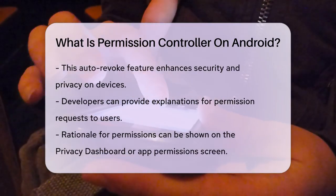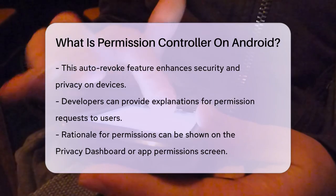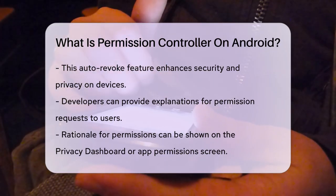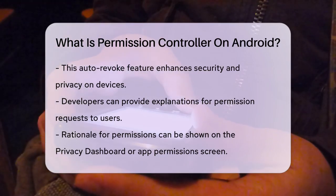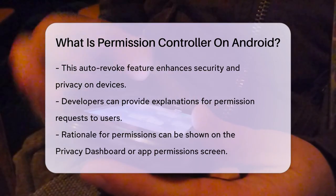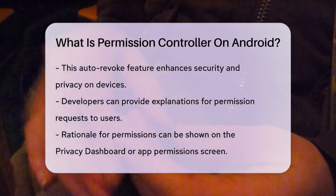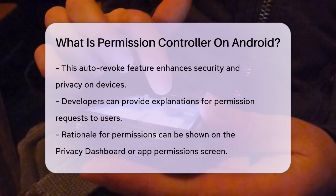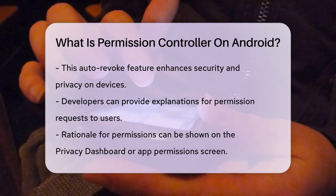For developers, the permission controller provides a way to explain to users why their app needs certain permissions. For example, if an app needs access to your location, it can display a rationale explaining why this is necessary, which can appear on the privacy dashboard screen or the app's permission screen.